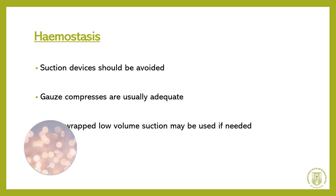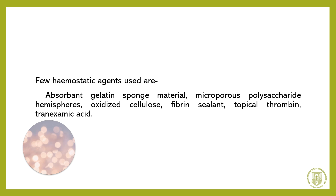After the surgical procedure, hemostasis has to be achieved. Suction devices should be avoided. Gauze compressors are usually adequate to achieve hemostasis, and gauze-wrapped low volume suction may be used if needed. Hemostatic agents used include absorbent gelatin sponge material, microporous polysaccharide hemispheres, oxidized cellulose, fibrin sealant, topical thrombin, and tranexamic acid.